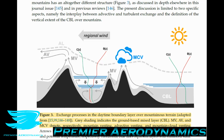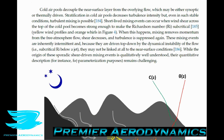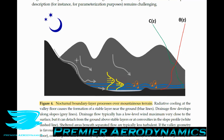Much of the focus on daytime boundary layers in mountainous terrain has been on convective boundary layers in valleys and basins — relatively well observed and understood compared to those over slopes and mountaintops. Conclusions on whether advection effects make the convective boundary layer height more uniform over mountains differ between observations and theoretical models, so advective venting may or may not produce uniform CBL heights and needs further study.